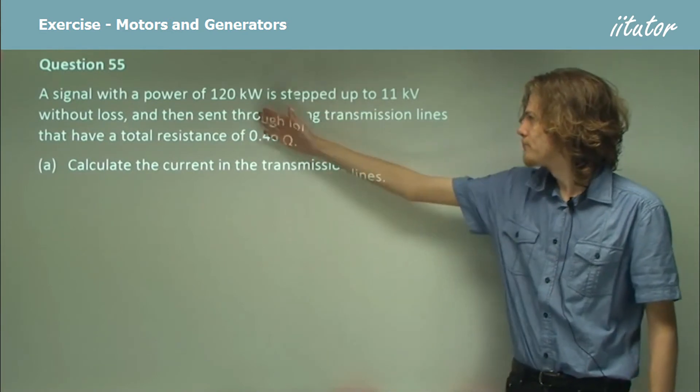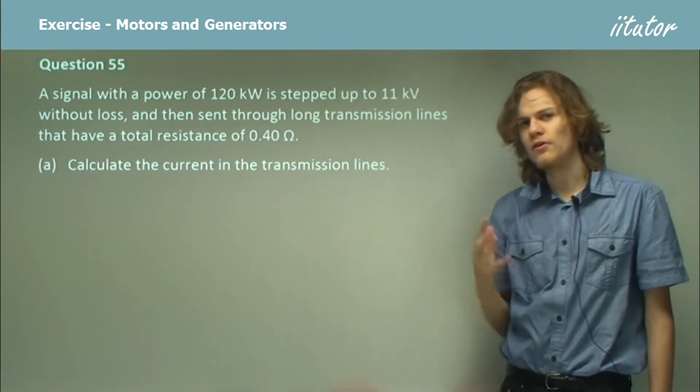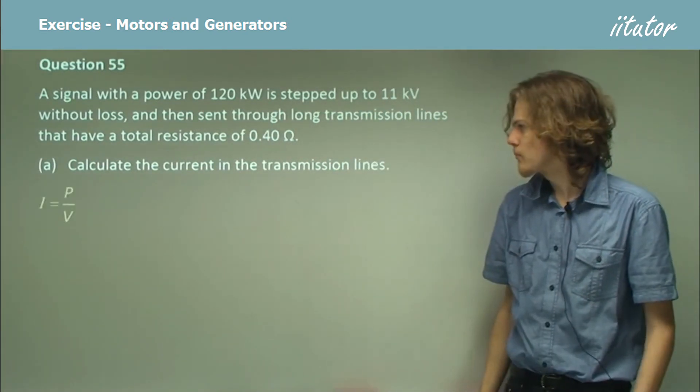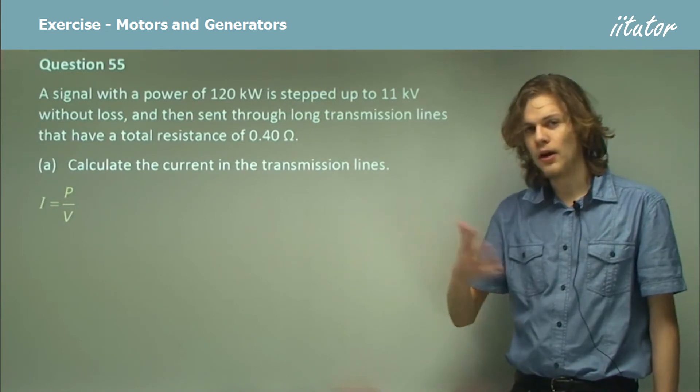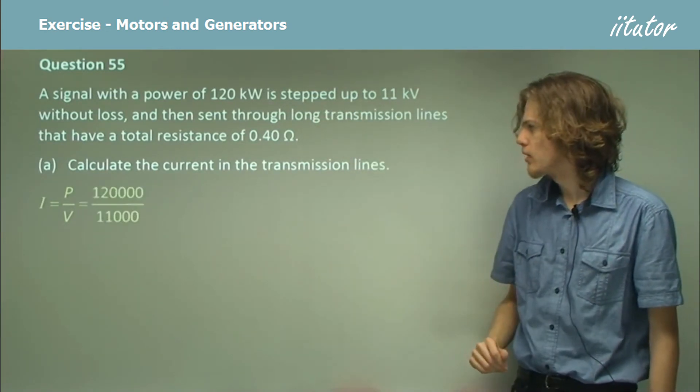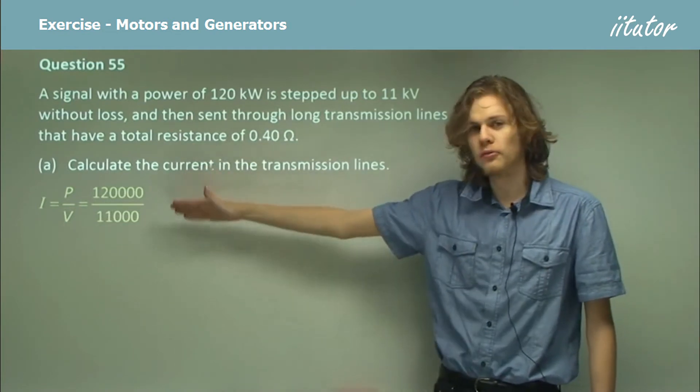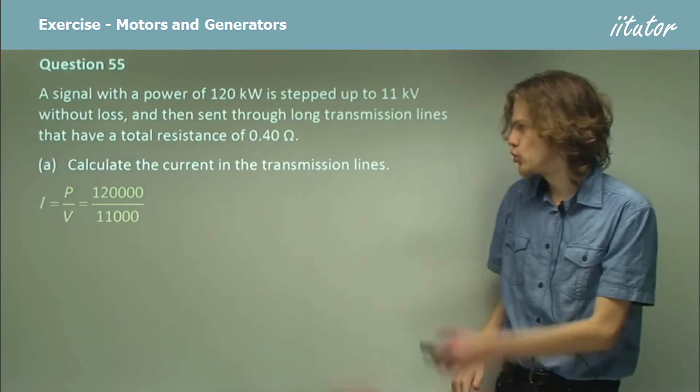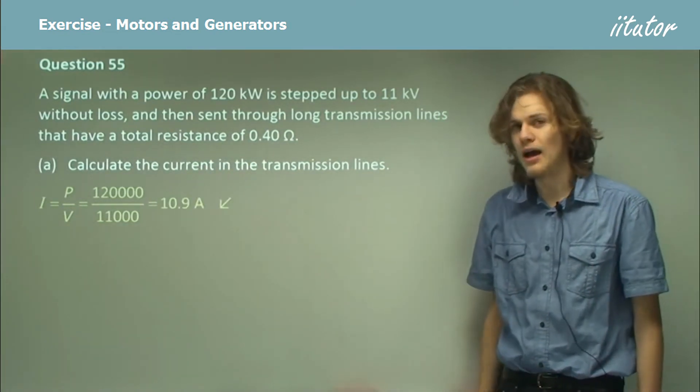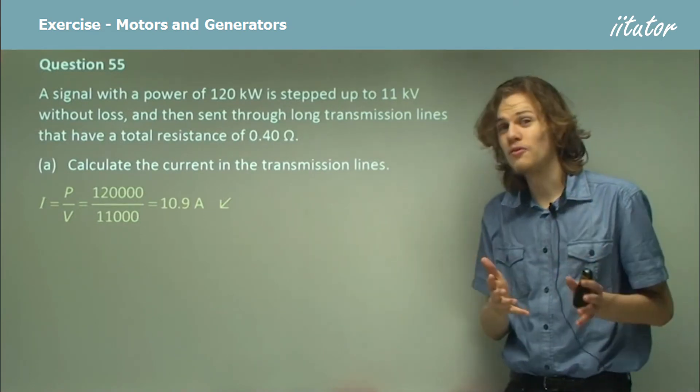We have the power, we have the voltage, we can find the current. Current equals power divided by voltage, substitute those in, we end up with 120,000 over 11,000, which evaluates to about 10.9 amps, which is much lower than 500. Isn't it good that we transformed it?